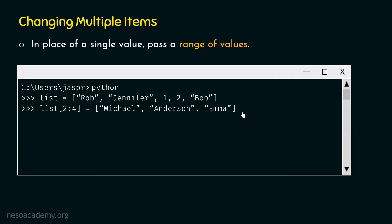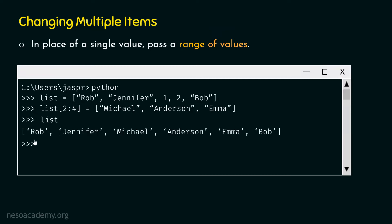Let's hit enter now. As we are not getting any error, this means we have successfully replaced those two items by these three items. Let's check this by typing list and hitting enter. We will get this list: Rob, Jennifer, Michael, Anderson, Emma, and Bob. These two items are successfully replaced by these three items.